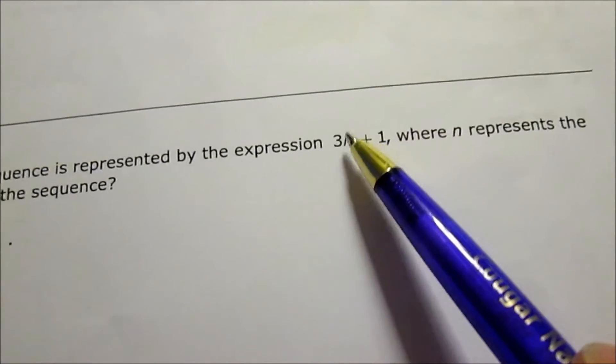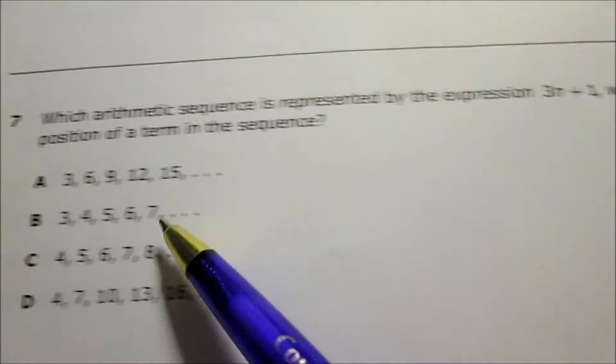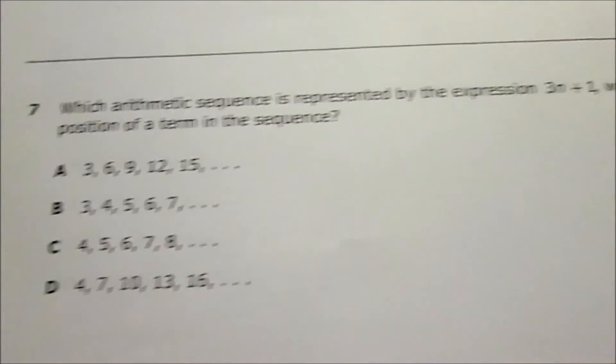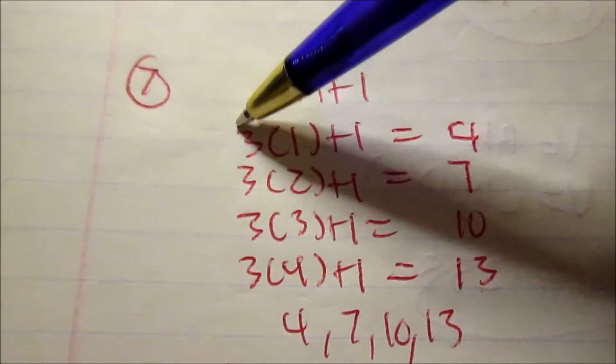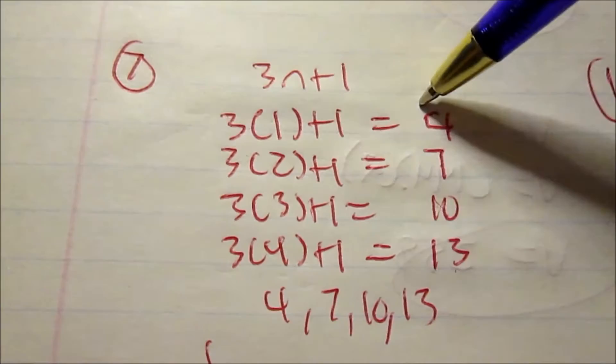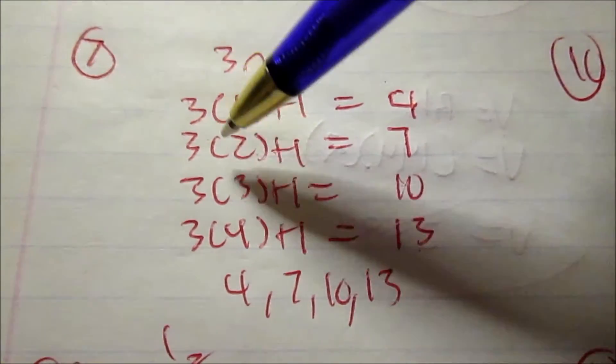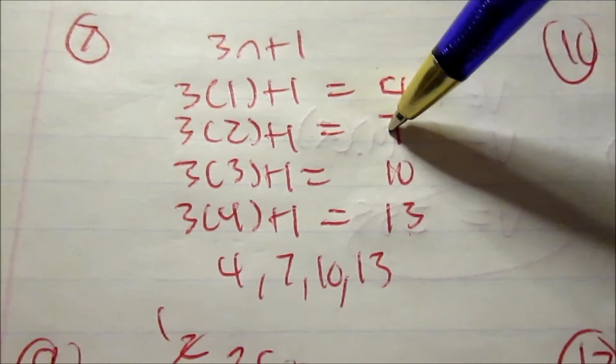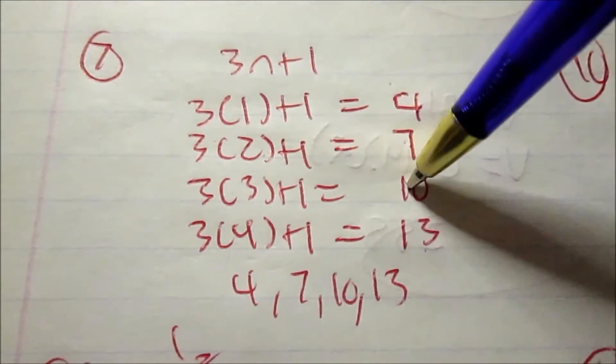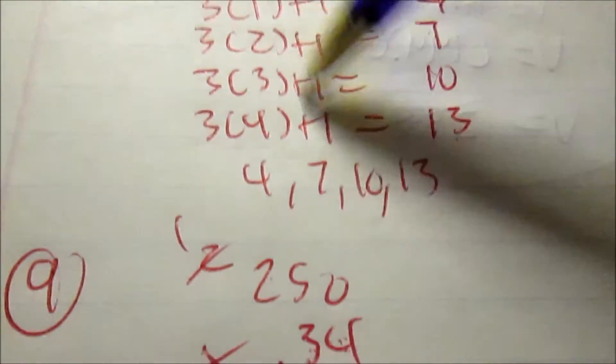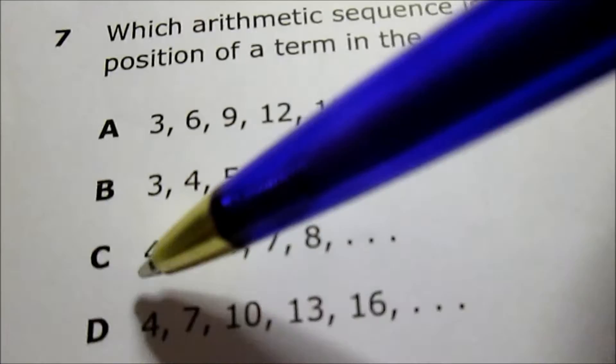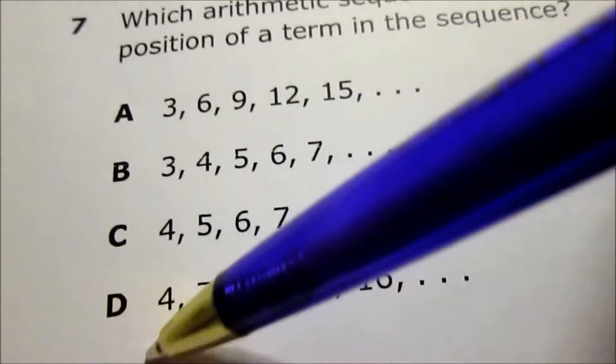Let's look at the work. Expression: first I put in 1, three times 1 plus 1 is 4. Then I put in 2, three times 2 is 6, 6 plus 1 is 7. Then I put in 3 and I get 10. Put in 4, I get 13. So my sequence should look like this: 4, 7, 10, 13. That's D.